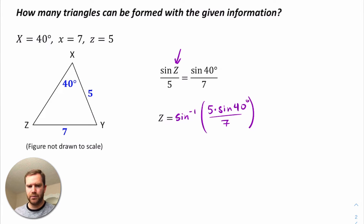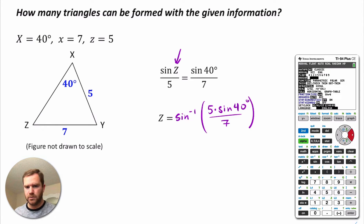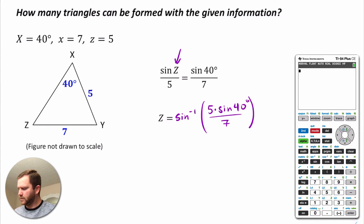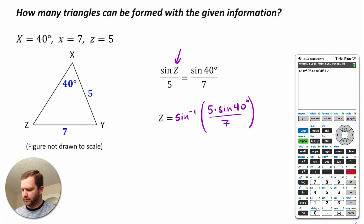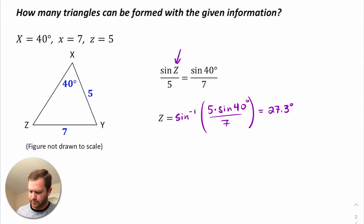We can go ahead and plug this into our calculator. First, make sure that you're in degree mode. Then throw the whole expression in: inverse sine of 5 times the sine of 40, all divided by 7. Hit enter and it will tell us that this is equal to 27.3 degrees. So the measure of angle Z is 27.3 degrees.